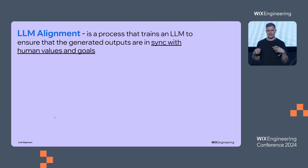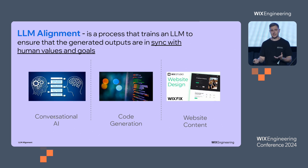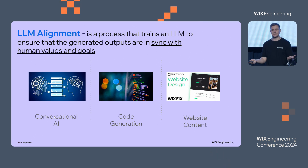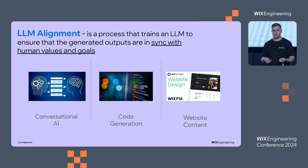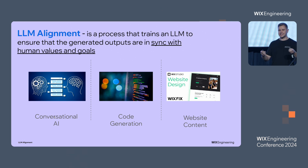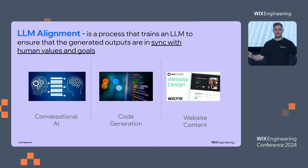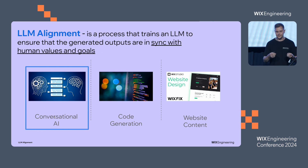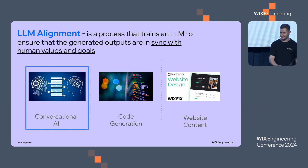To give you a better understanding of what's going on with LLM alignment, here are a few examples. The first one is conversational AI, or chatbots. This is where we are aligning models to be able to talk. In code generation, we can align models to generate code in our way — maybe in the Wix way sometimes, or generate within a specific language. And in website content, we are aligning models to generate content which suits our design rules or content writing team rules in the best way. For this presentation, we will focus on conversational AI, as it's the most intuitively understandable use case.